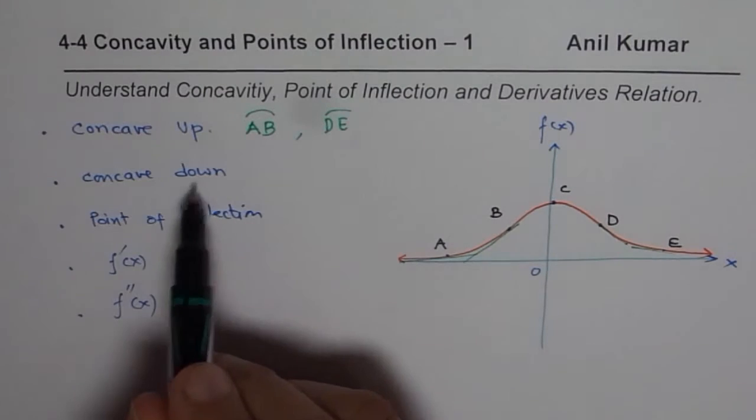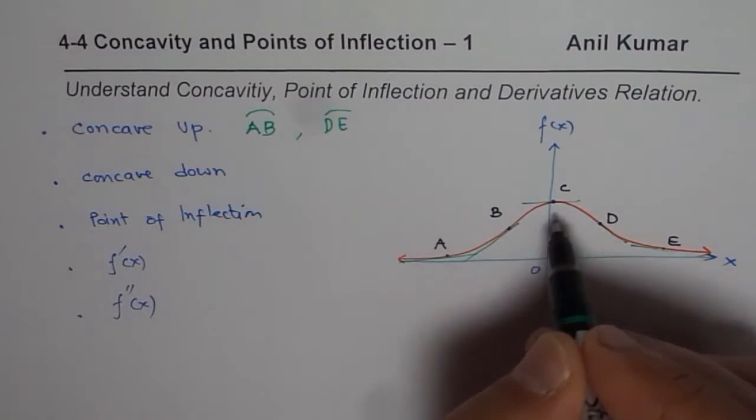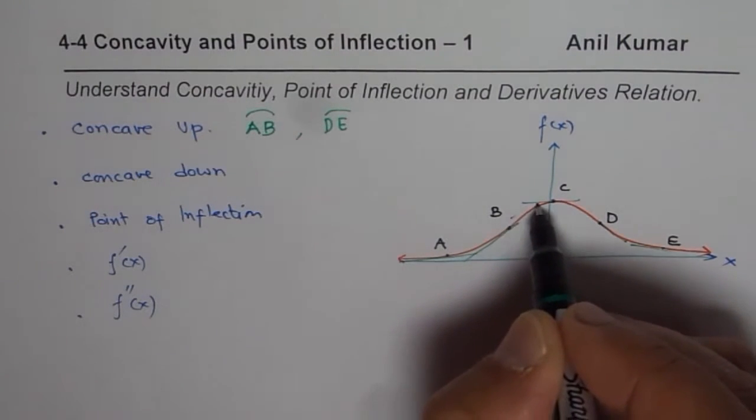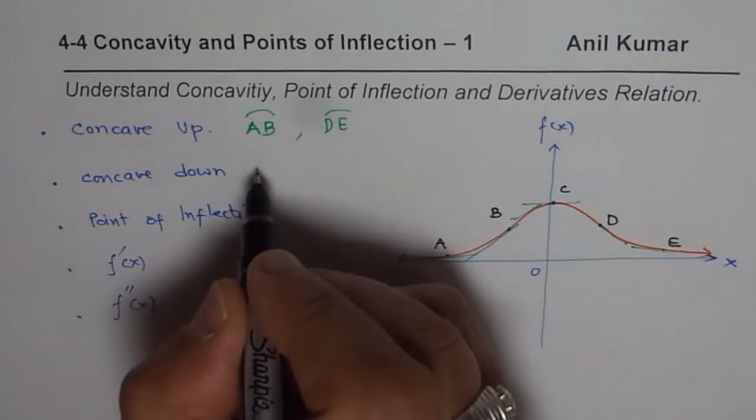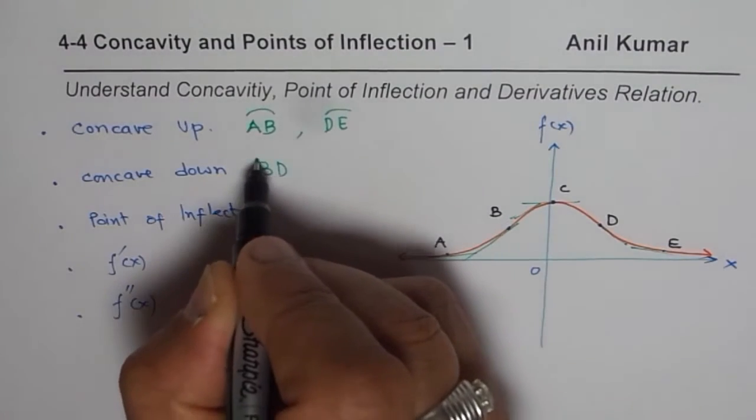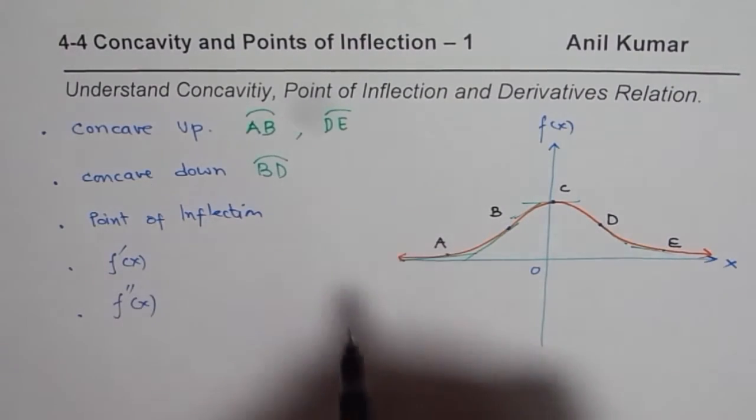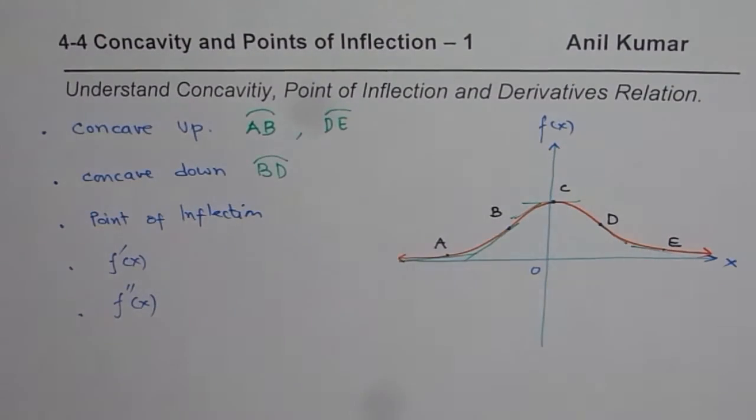As far as concave down is concerned, so if I draw the tangent, then the graph is below the tangent line from b to d. So from, let us say, b to d, it is concave down. So that is the portion.